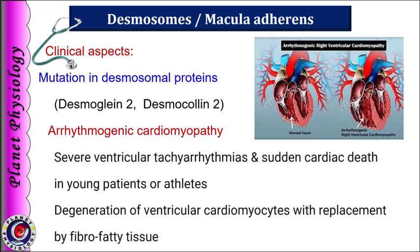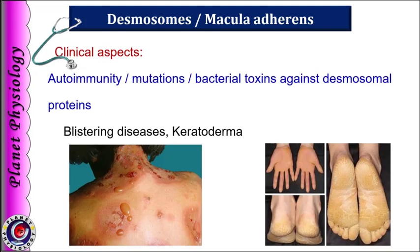Regarding the clinical aspects of desmosomal proteins: mutations in these proteins are associated with arrhythmogenic cardiomyopathy, where the person has a high incidence of severe ventricular tachyarrhythmias and sudden cardiac death, especially in younger persons and athletes. In this condition ventricular muscles degenerate and are replaced by fibrofatty tissue. Autoimmune antibodies or bacterial toxins against desmosomal proteins, as well as mutations in these proteins, are also associated with various skin and mucous membrane diseases like blistering diseases or keratoderma.